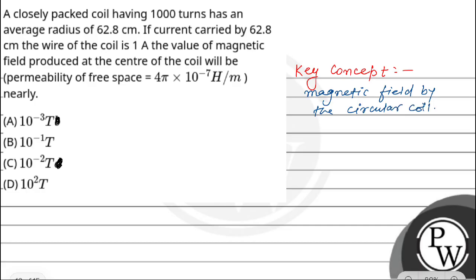The question gives us a thousand turn coil which has average radius 62.8 centimeter and current is 1 ampere. We need to find how much magnetic field is at the center.